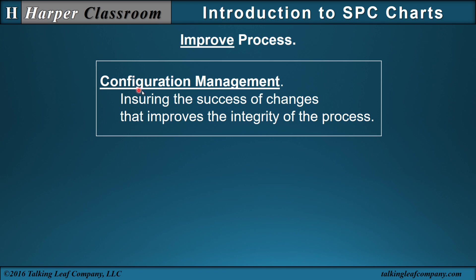Improving the process includes configuration management: ensuring the success of changes that improve the integrity of the process. There are two things here — first, ensuring the changes were done correctly and were effective; and second, ensuring that these changes improve the integrity of the process. Sometimes when you change one part of a process, another part becomes a problem, so the integrity of the process must be maintained when changes are being made.